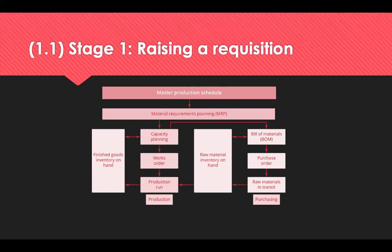The requisition must be authorised by a budget holder of authority before it's passed to the procurement department. Requisitions are most commonly raised via email or by an automated process based on a Materials Requirement Planning system, MRP. Let's go through the diagram on screen to explain what information MRP systems use to determine if a requisition is needed.